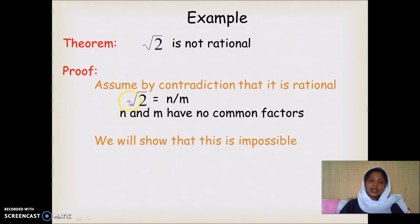If it is a rational number then we can write root 2 as some n divided by m where both n and m are integers that do not share any common factor. We will see that we cannot write such a thing.